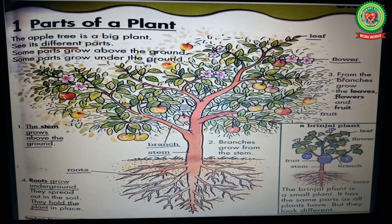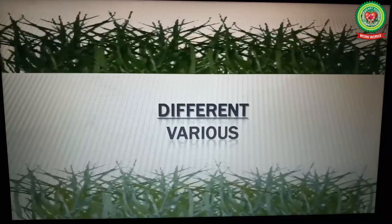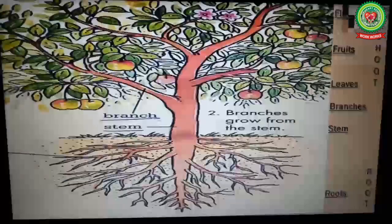The apple tree is one of the big trees. See its different parts. Underline the word 'different' and write down its meaning: various. On your book you can see different parts of a plant like roots, stem, branch, fruit, leaf, and flower. Some parts grow above the ground and some parts grow under the ground.